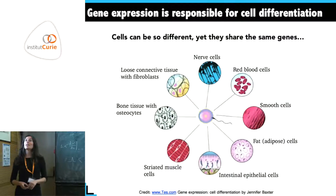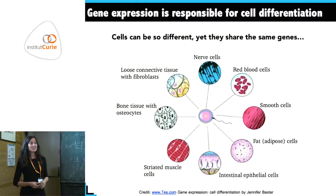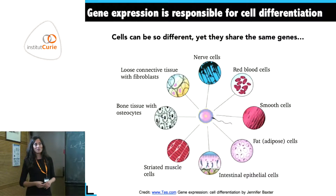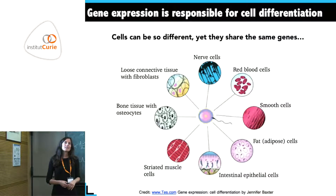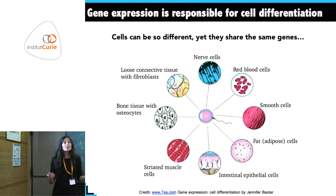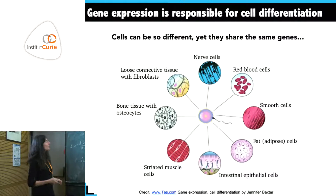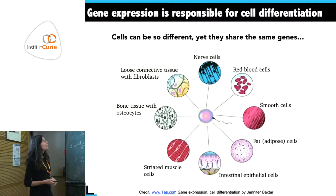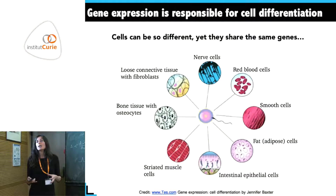You have seen this slide already yesterday in a slightly different form in Eric's talk. We all know that genetic information is shared among all cells, and nonetheless they have such different looks or perform different functions. It's quite interesting to imagine how that can happen, and we know this is due to the fact that even if the genes are there, they are not always all expressed.